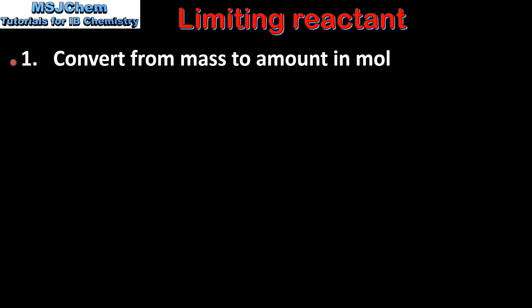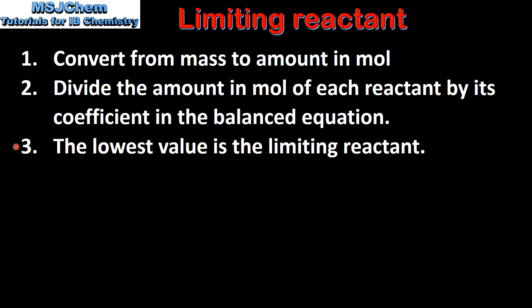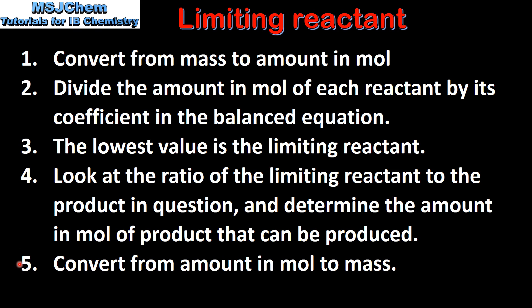Let's end with a summary. Step 1: convert from mass to amount in moles. Step 2: divide the amount in moles of each reactant by its coefficient in the balanced equation. Step 3: the lowest value is the limiting reactant and the other reactant is the excess reactant. Step 4: look at the ratio of the limiting reactant to the product in question and determine the amount in moles of product that can be produced. Step 5: convert from amount in moles to mass.